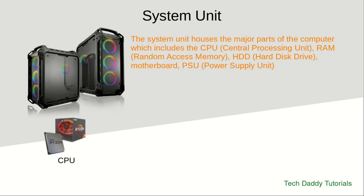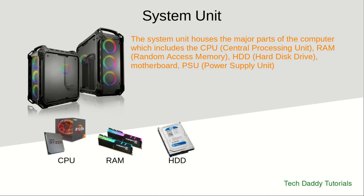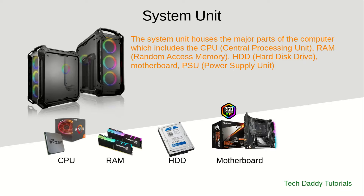Next is the system unit. The system unit houses the major parts of the computer, including the CPU or central processing unit — this is the brain of the computer, this is where most calculations are done — followed by the RAM, which helps the CPU to perform operations and calculations.